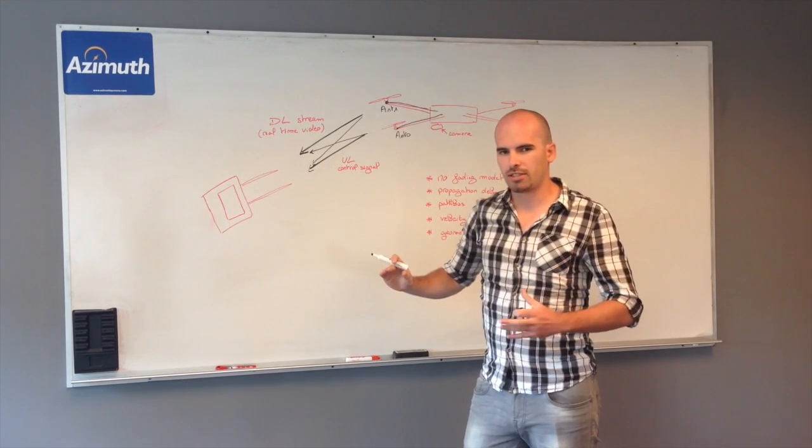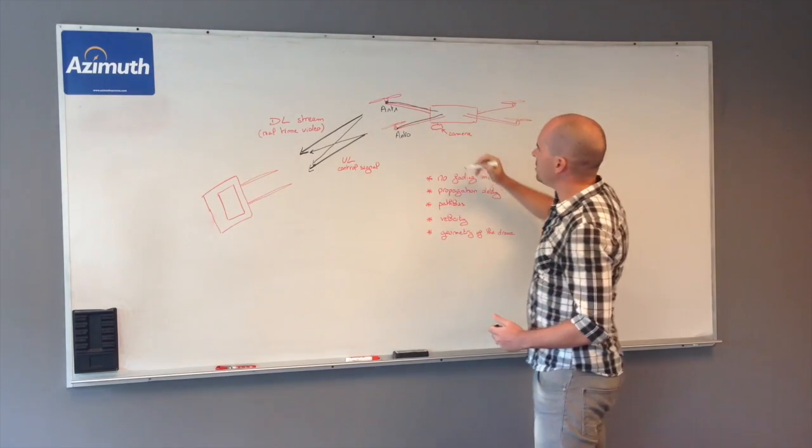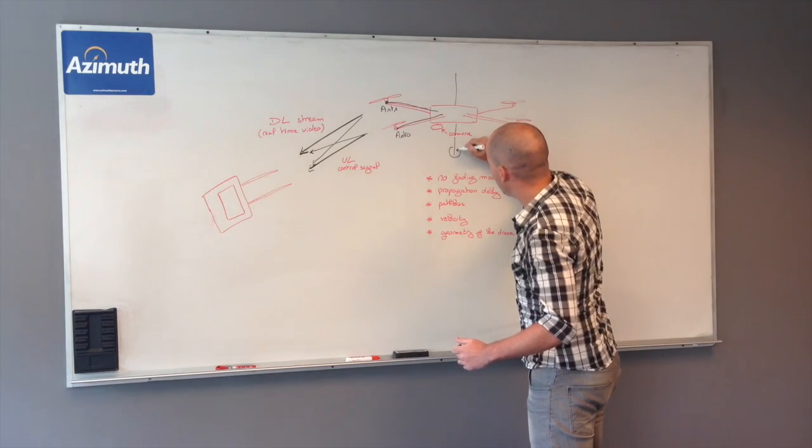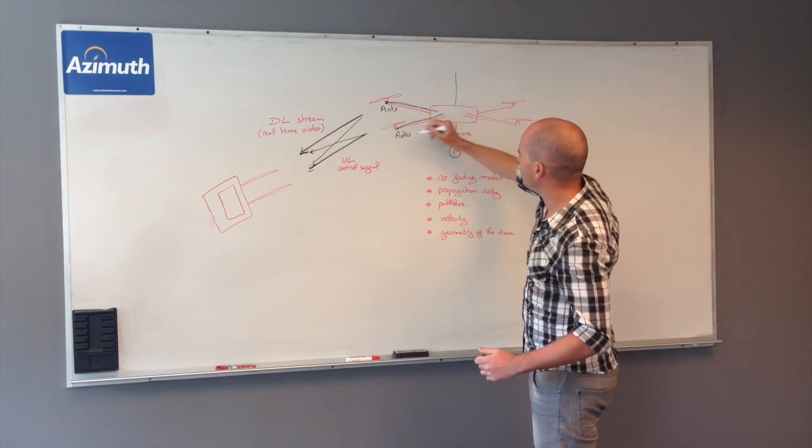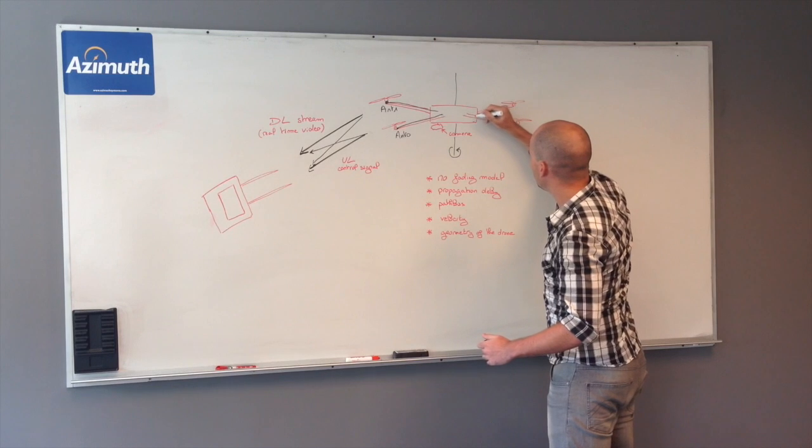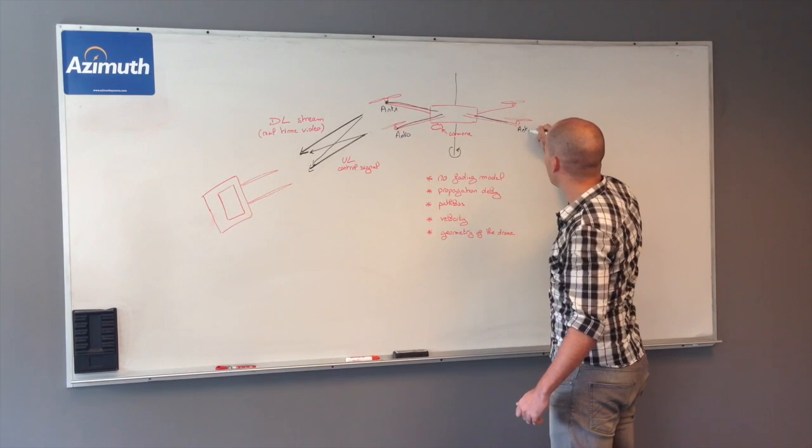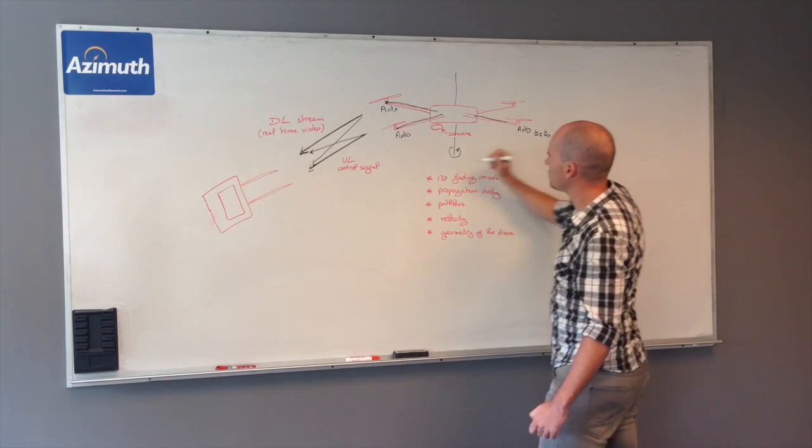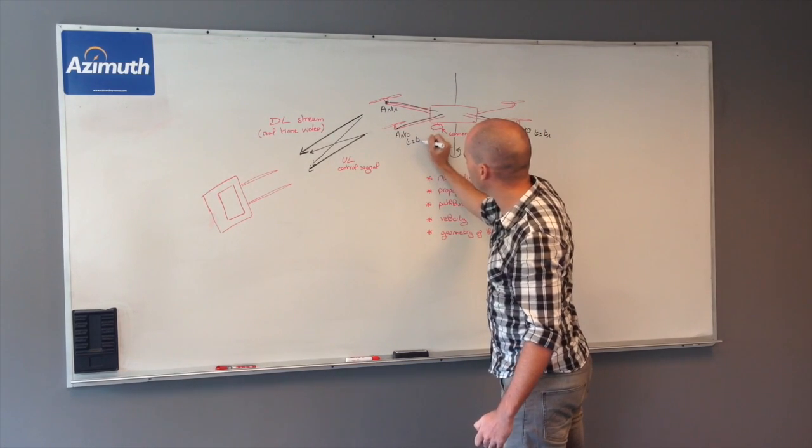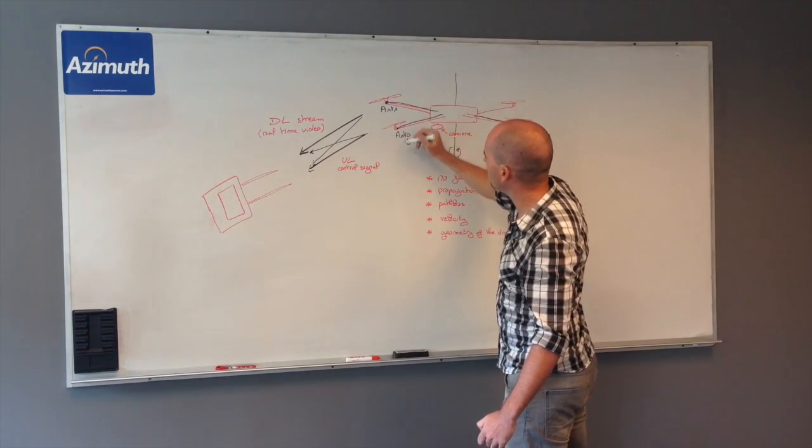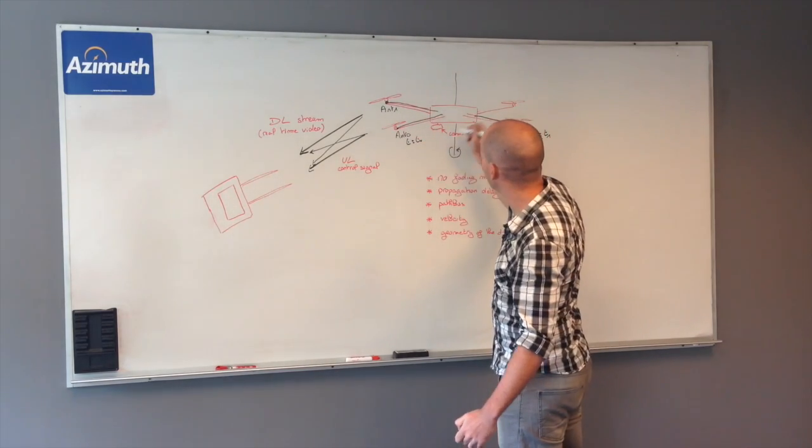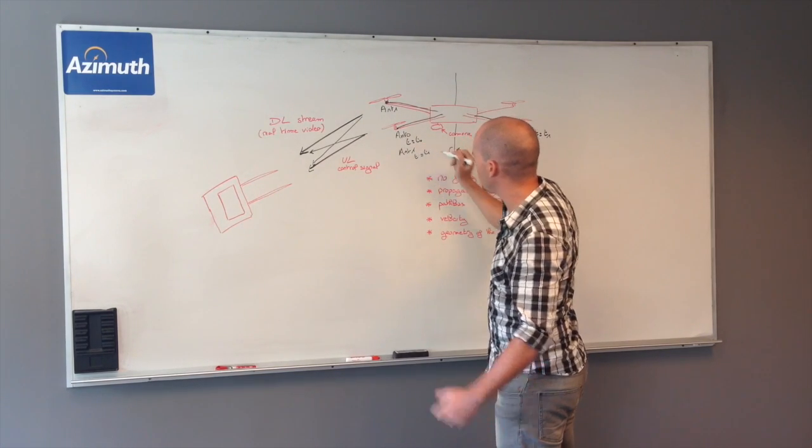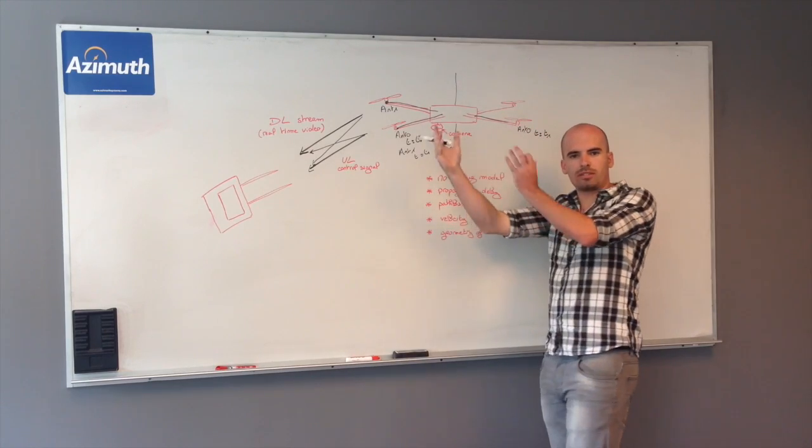But, there is some corner case that we have to study. Imagine that your drone is rotating on itself. At some point, the Ant 0 will be here now. So, this would be Ant 0 at time T1. This one, Ant 0 at time T0. And this one, Ant 1, will get to Ant 0 location actually. So, this would become Ant 1 at time T1. So, the drone just rotated on itself.